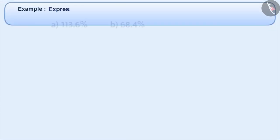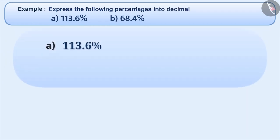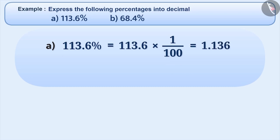Next example, express the following percentages into decimals. 113.6% is equal to 113.6 into 1 by 100, which is equal to 1.136. To express a percentage into decimal, we will move the decimal point two positions towards the left. In 113.6, after moving the decimal point two positions towards the left, we get the decimal form as 1.136.